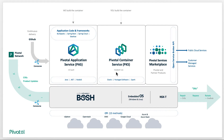Moving to the upper layer, the customer or user has their code in GitHub or another code repository like Bitbucket. Using Concourse or another CI tool like Jenkins, they achieve a CI/CD environment. Buildpacks, application code, Spring Boot applications, or .NET applications are built and deployed via CF push to get them running.